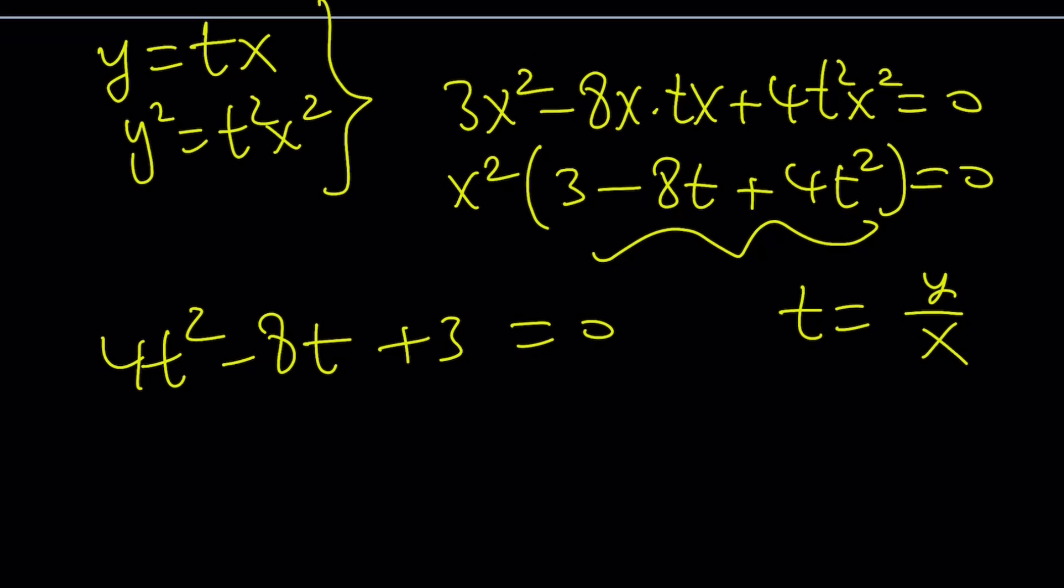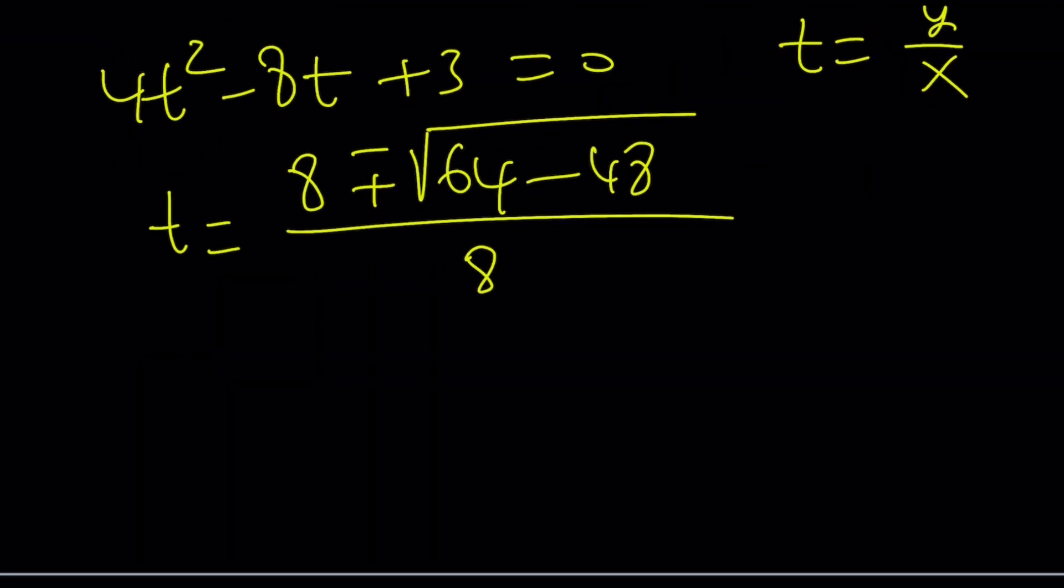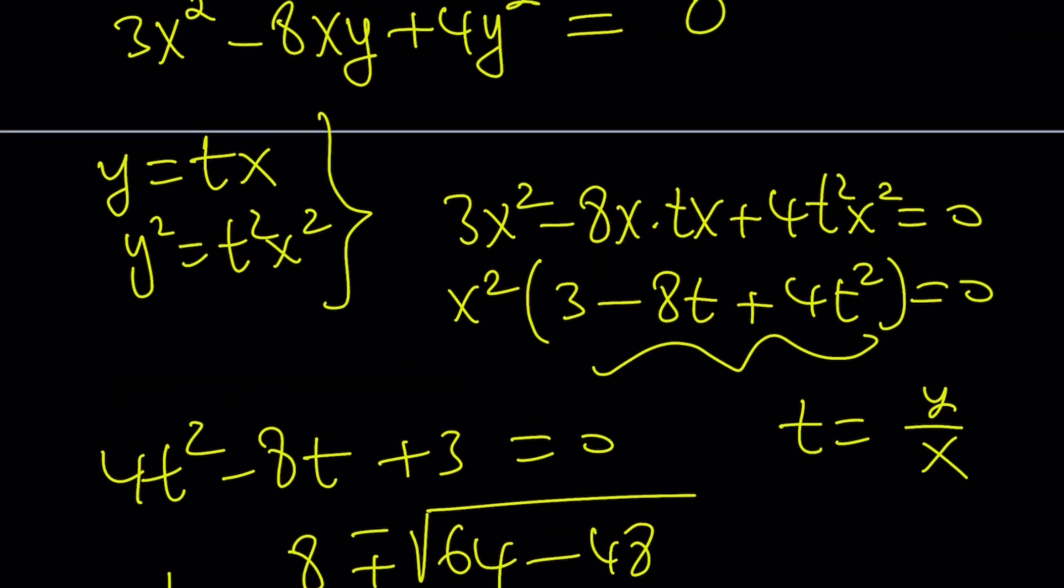If you solve for t, you're going to get -b ± √(b² - 4ac). That's going to be 48 and the square root of that is going to be 16. So we're going to get 8 ± 4 divided by 8. 12 over 8 is going to be 3/2 and 4 over 8 is going to be 1/2. So those are going to be the t values, 3/2 and 1/2 and from here you should get one of them in terms of the other.